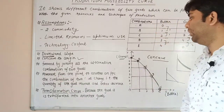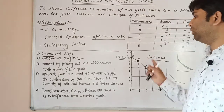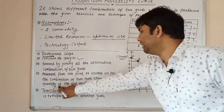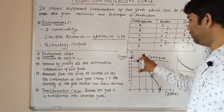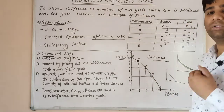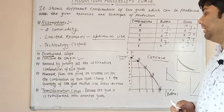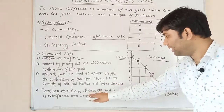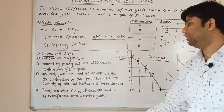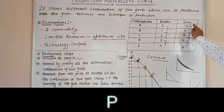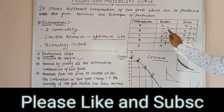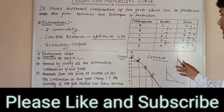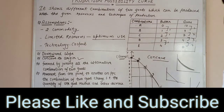Moving from one point to another on the PPC, as the quantity of one good increases, the quantity of the other good decreases. This is why it is also called the Transformation Curve — because one good is, in effect, being transformed into another good.